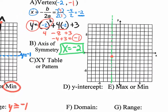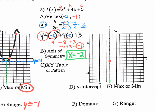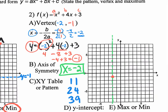Now we need to use either a table or the pattern. The easier thing is to use the pattern 1-1, 2-4, 3-9 from the vertex. The parabola opens up because the a value is positive. So from the vertex, go 1 over 1 up. Then go back to the vertex for 2-4: go 2 over and 4 up. And for 3-9: go 3 over and 9 up. Then reflect all those points to the other side of the axis of symmetry.